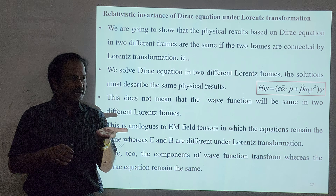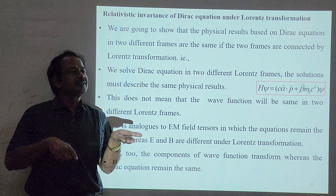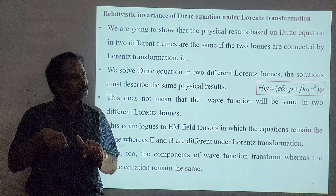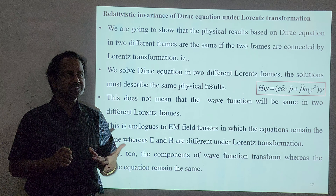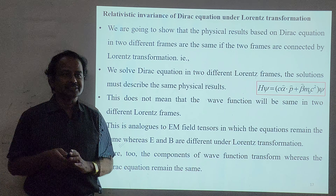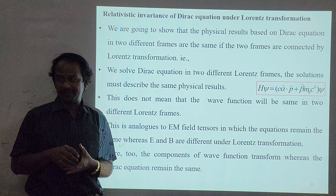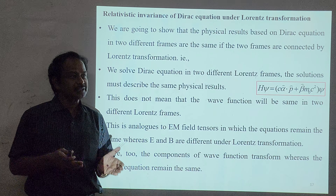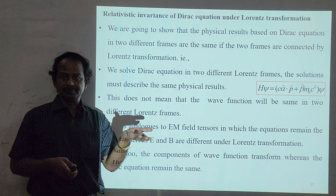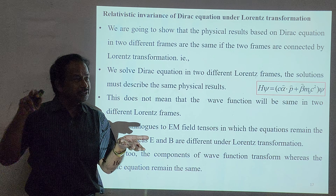If I perform an experiment in one coordinate system and get a result, it must be the same in another coordinate system — both moving with the same velocity. That is the principle behind the special theory of relativity. Maxwell's equations are linear and consistent with special relativity. You can perform the same Maxwell's equations in another coordinate system through Lorentz Transformation and they will remain the same.